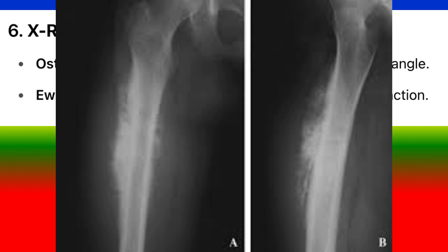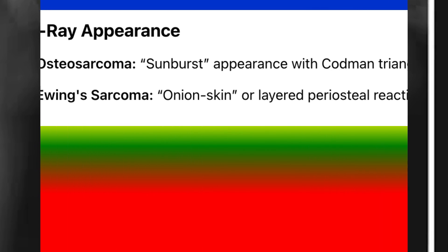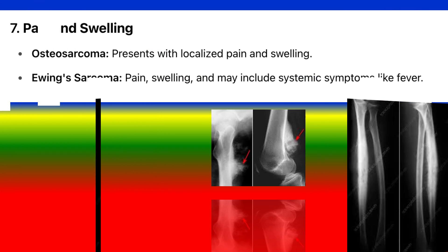6. X-ray appearance. Osteosarcoma: sunburst appearance with Codman triangle. Ewing's sarcoma: onion skin or layered periosteal reaction.